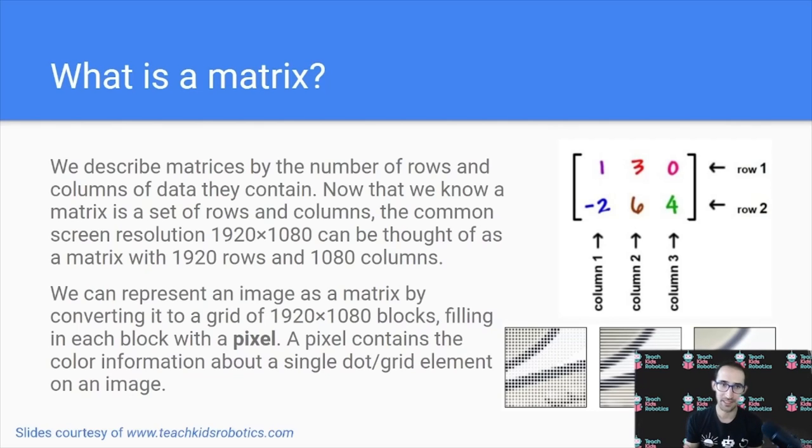What is a matrix exactly? A matrix is simply what we call a set of rows and columns that, if we consider screen resolution, can be like 1920 by 1080. A matrix with 1920 rows and 1080 columns. We can also represent an image as a matrix by converting it to a grid of 1920 by 1080 blocks, filling in each block with a pixel.